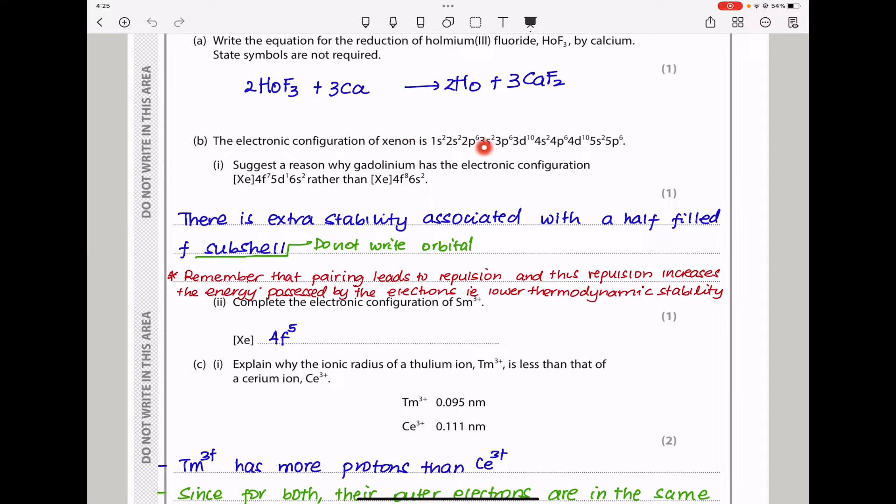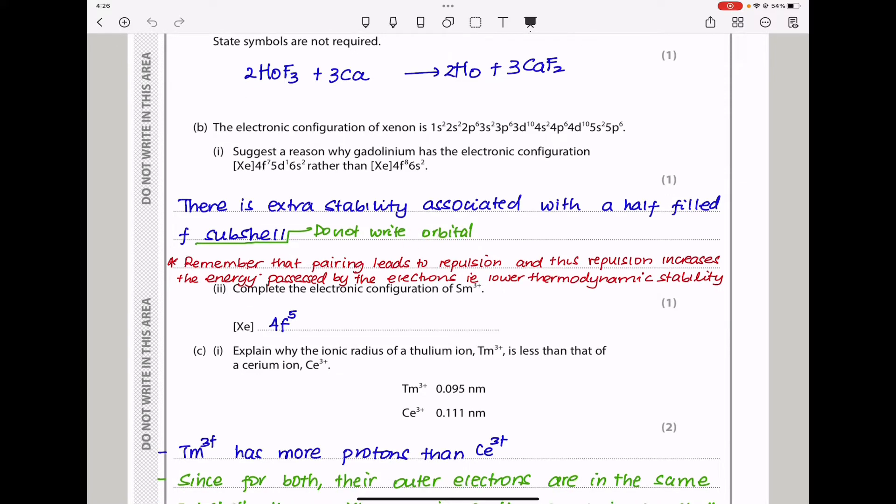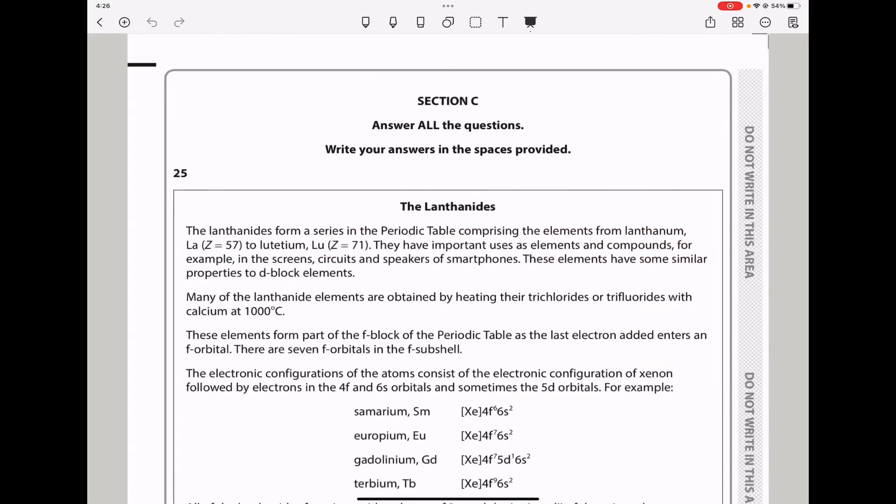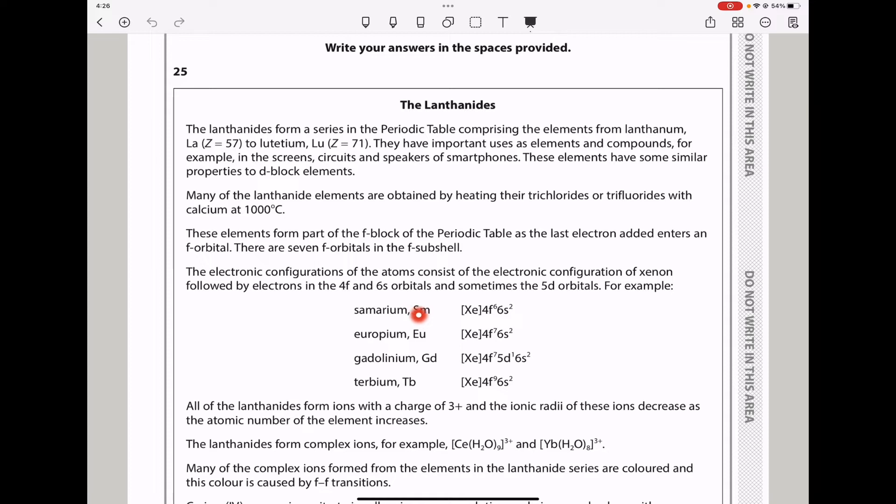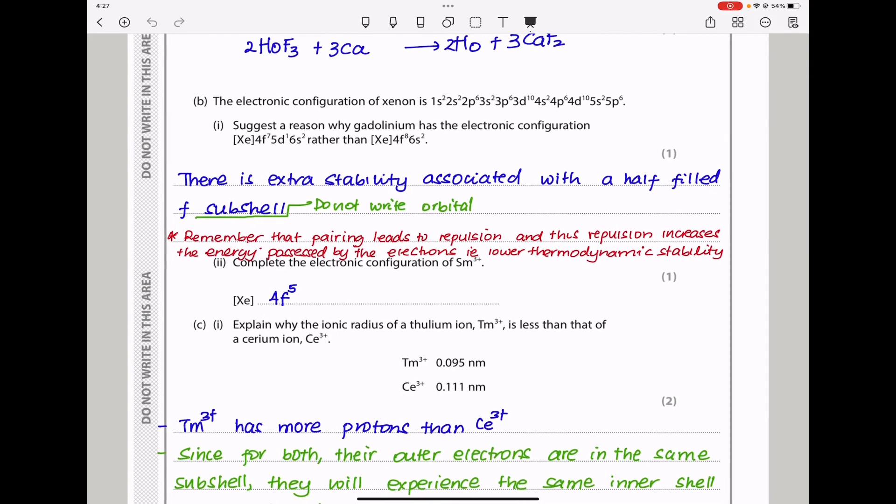The electronic configuration of xenon is that. Suggest the reason why gadolinium has the electronic configuration of that rather than that. This is due to stability like what we see in chromium. So I say there is extra stability associated with a half-filled f-subshell, do not say orbital here. Complete the electronic configuration of Sm3+. Sm is like that and if Sm3+, it needs to lose 2 electrons here in the s and then 1 electron here. So we're going to have xenon and 4f5 and therefore this was the answer for that.